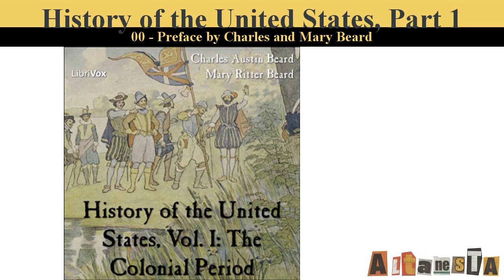As things now stand, the course of instruction in American history in our public schools embraces three distinct treatments of the subject. Three separate books are used. First, there is the primary book, which is usually a very condensed narrative with emphasis on biographies and anecdotes. Second, there is the advanced text for the 7th or 8th grade, generally speaking, an expansion of the elementary book by the addition of 40 or 50,000 words.